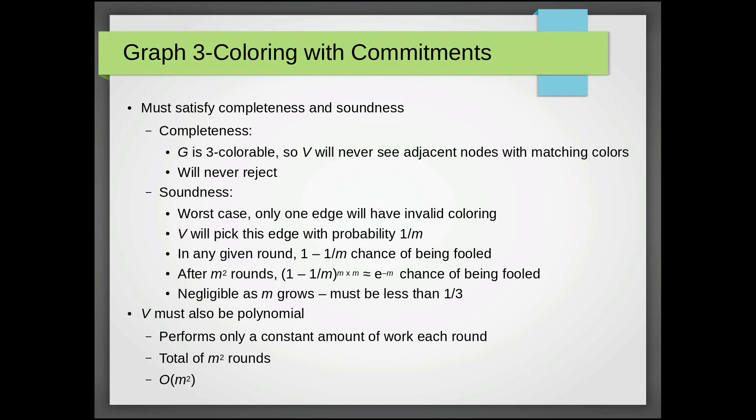Finally, note that V must also run in polynomial time. This must be satisfied for the scheme to even be an interactive protocol, let alone an interactive proof system. So note that V only performs a constant amount of work each round, because all it has to do is randomly choose an edge, send this to P, and then compare the two nodes that are revealed. This is obviously constant.